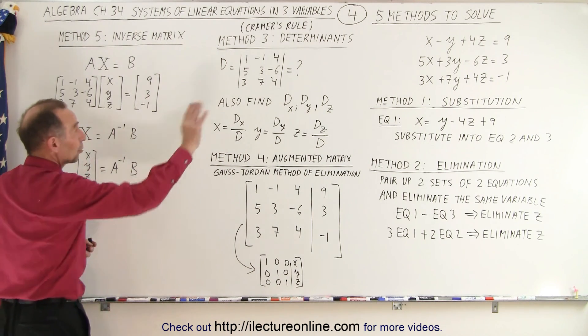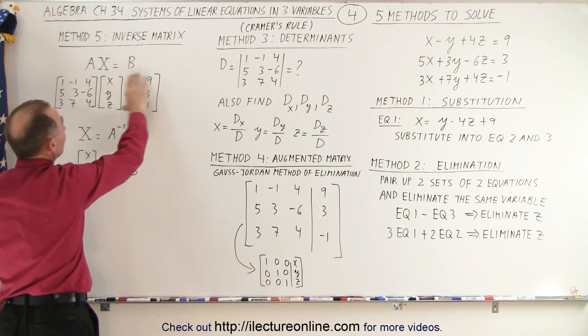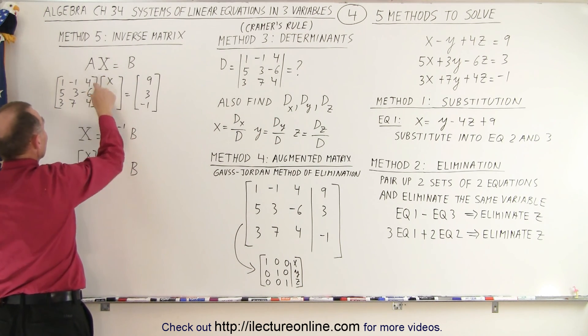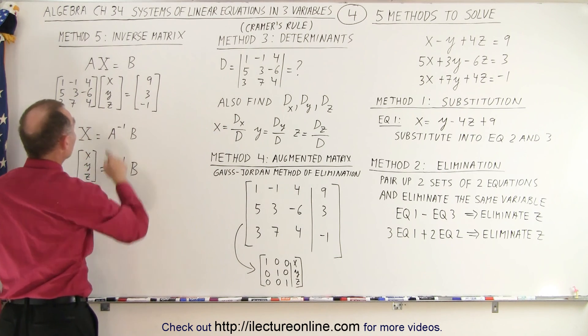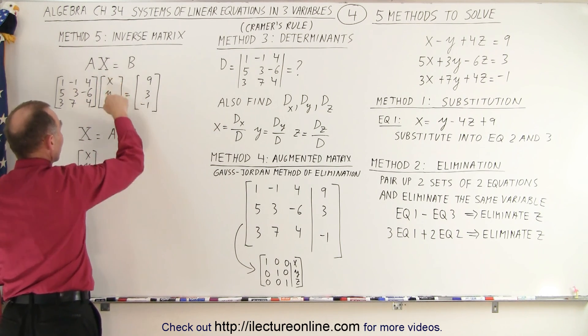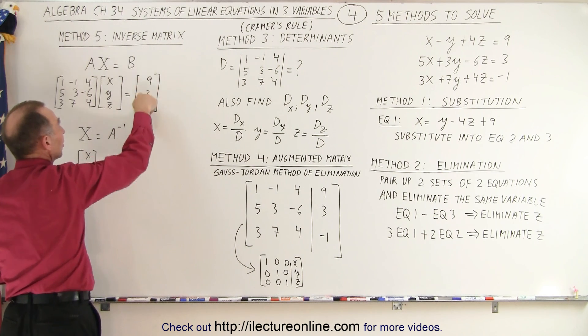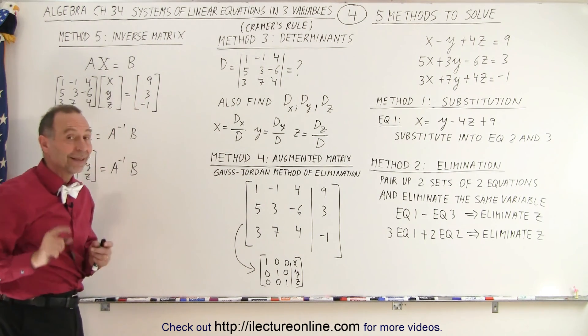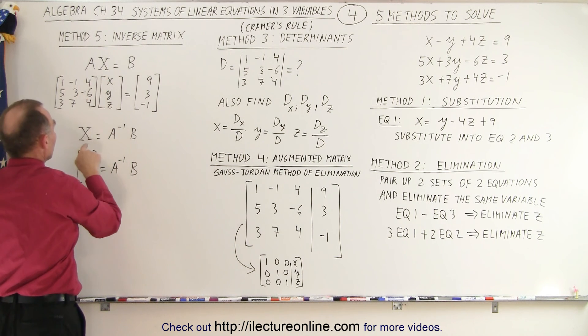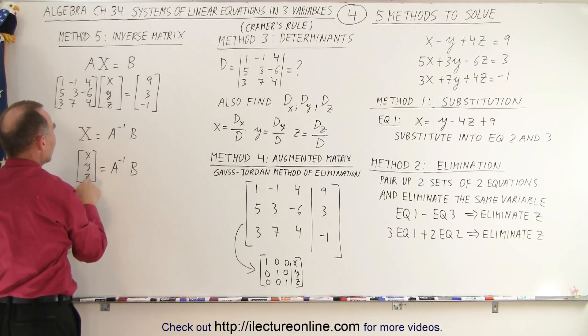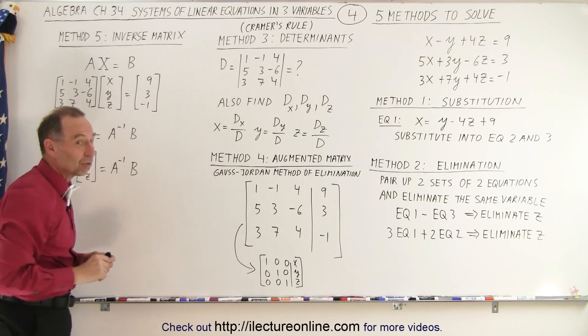Or we can take the three equations and write them in this matrix format. A, again, is the coefficients of the x, y, z variables in our three equations. The x matrix is the x, y, and z, the three variables. And the B matrix is the three constants on the right side. Then what we need to do is find the inverse of the A matrix. Because we can find x, y, z by taking the inverse of the A matrix and multiplying it by the B matrix.